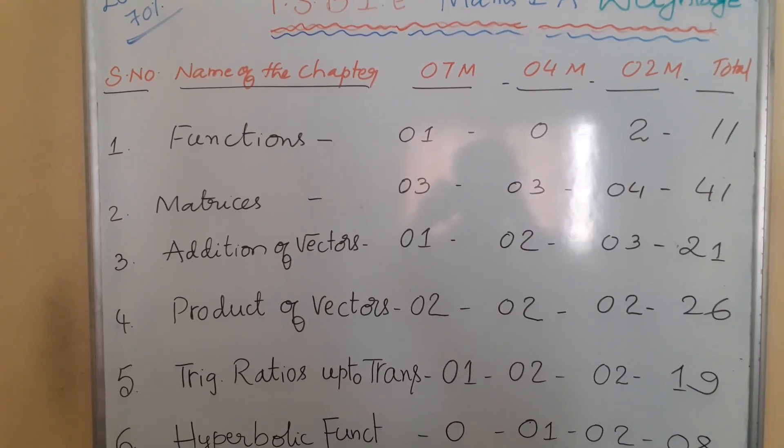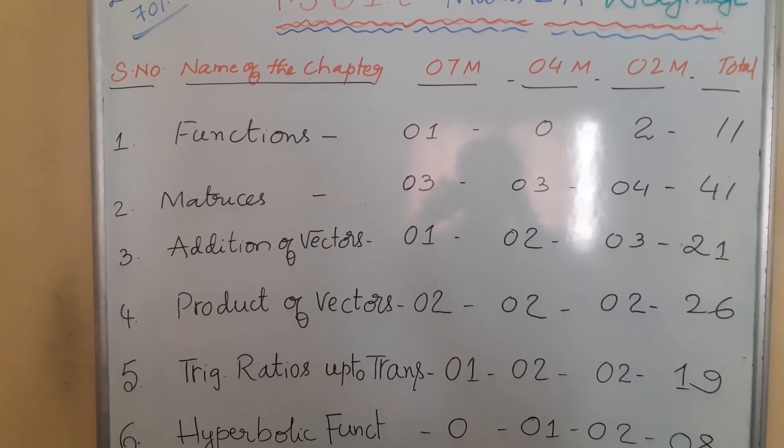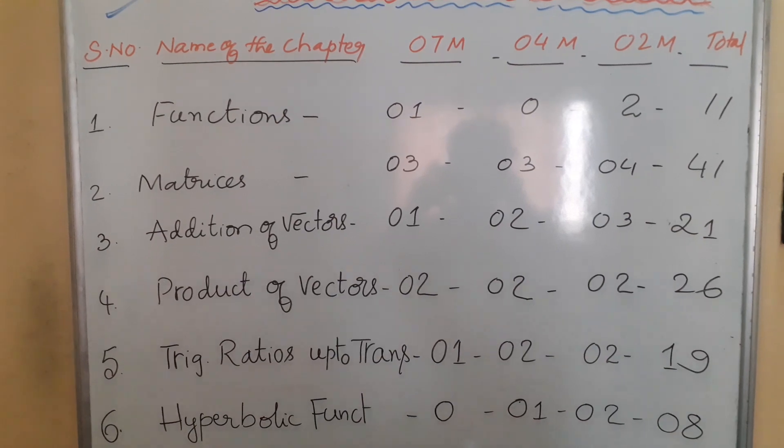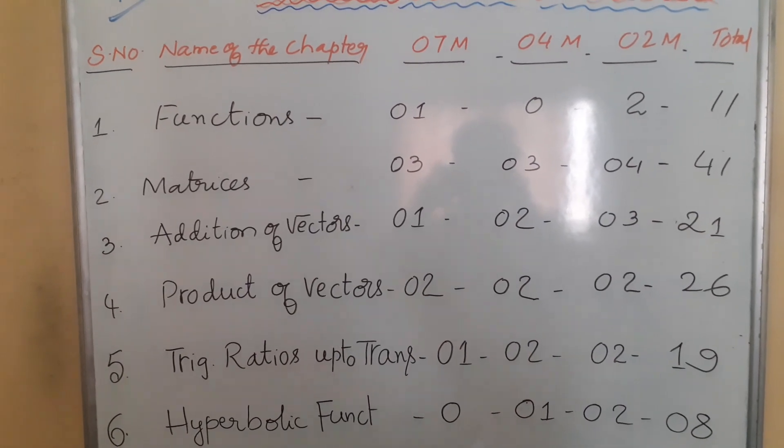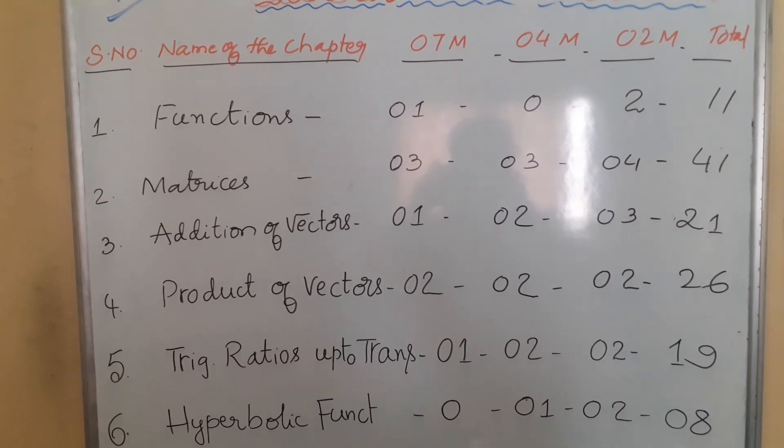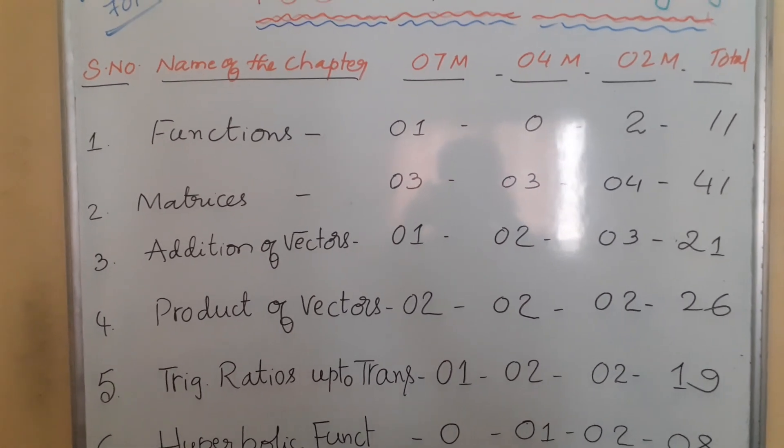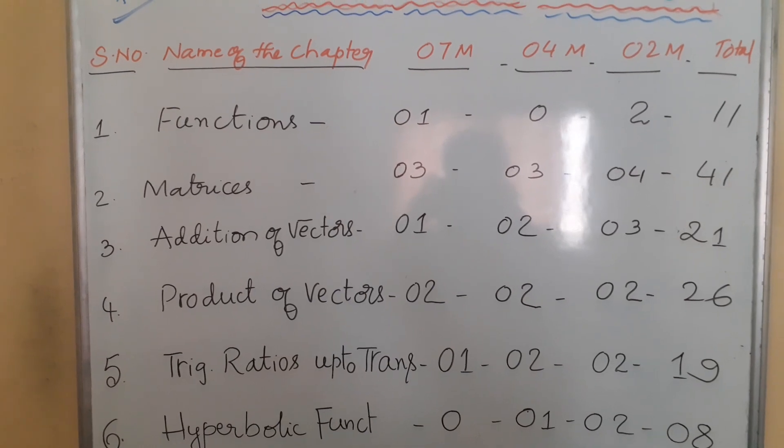Second chapter is Matrices. In Matrices, three 7-mark questions will be coming, three 4-mark questions, and four 2-mark questions. The total weightage is 41 marks. Most weightage is given to Matrices. Focus more on Matrices - it's an easy chapter.